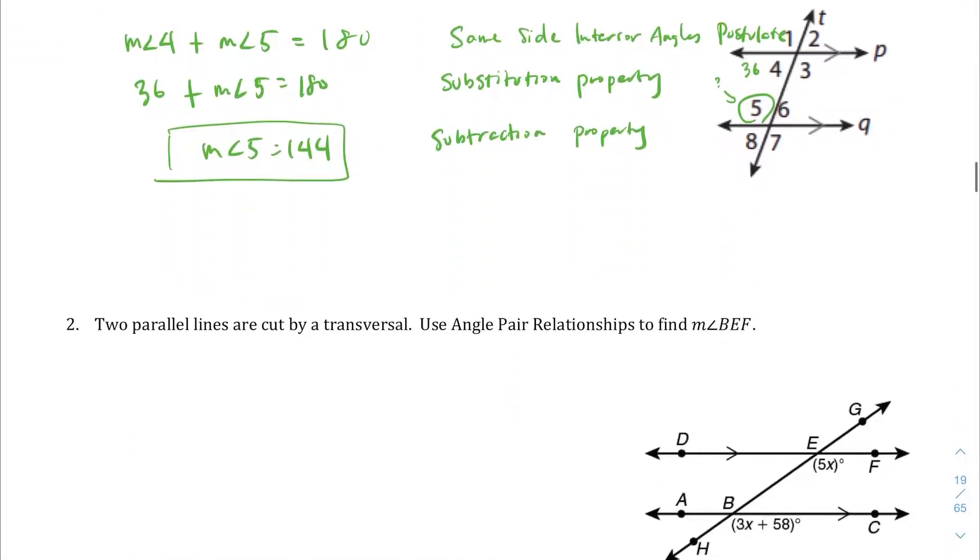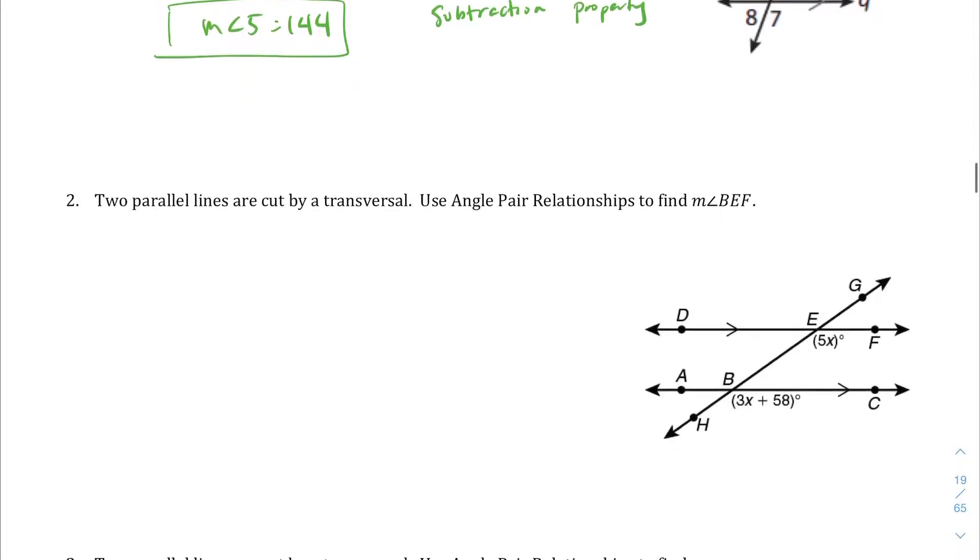I won't write all the reasons like that anymore, but hopefully you'll be able to follow along. Question number 2. Two parallel lines are cut by a transversal, so line D and line A are parallel. We know this because of these handy dandy little arrows here. It tells us that these two lines are parallel.